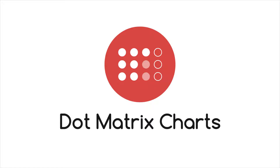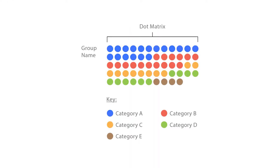Let's look at dot matrix charts. Dot matrix charts display discrete data in units of dots, each coloured to represent a particular category and grouped together in a matrix.